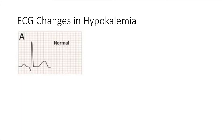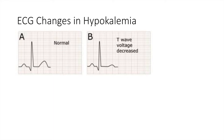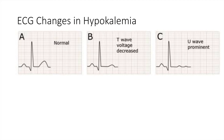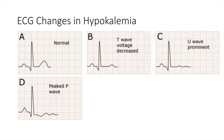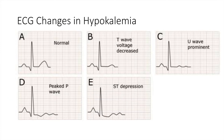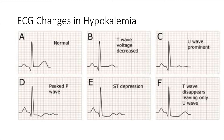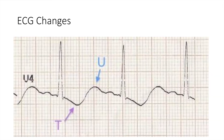We will now discuss the ECG changes in hypokalemia. The normal ECG is shown, and patients with hypokalemia can have decreased T-wave voltage. They can also have a prominent U wave, as indicated by the arrow. Hypokalemia can also cause a peaked P wave and ST depression. Eventually the T wave will disappear, leaving only the U wave. The next ECG shows a transition between the T wave and the U wave, until eventually the T wave disappears leaving only the U wave.